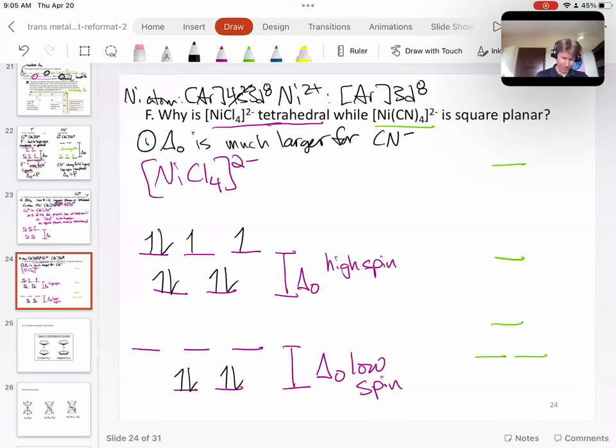Low spin means pair them as much as possible. One, two, three, four, five, six, seven, eight. And so high spin and low spin are the same. We said that in general, you have to have between four and seven the electrons for there to be a difference. I always like to check.